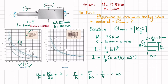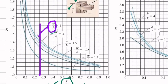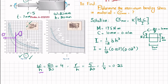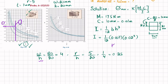With R/H equal to 0.25, we draw a vertical line from this point on the chart. W/H is 4, so we use that curve. The line intersects, and drawing a horizontal line gives us a value of 1.45, which is the stress concentration factor K.